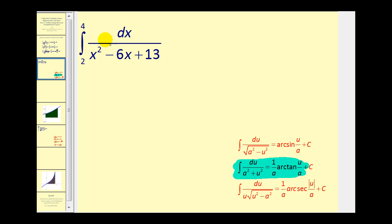So what we'll do to start off is separate the constant from the x terms. So we'll have 13 plus the quantity x squared minus 6x.